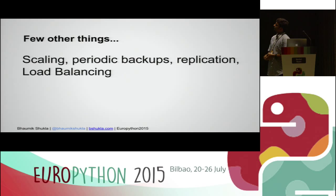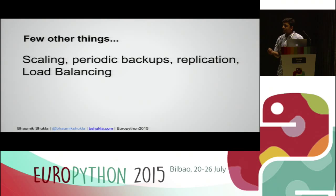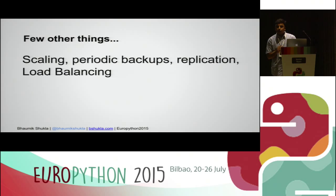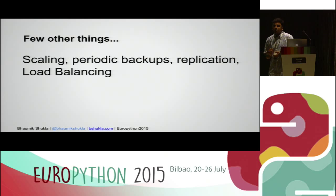A few other things to take care of: scaling depends on your use case and what kind of usage you have. You may have a database overload, so you can scale your database vertically or horizontally. You can have performance-based scaling if your number of applications is not sufficient. You should also have periodic backups of your data, which can be done through Jenkins and Fabric jobs. Periodic backups provide data reliability. Load balancing through Nginx or Apache can balance your load.